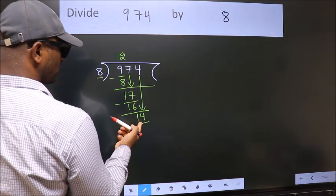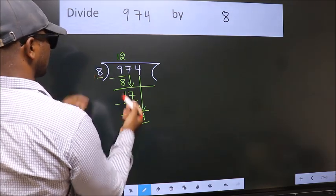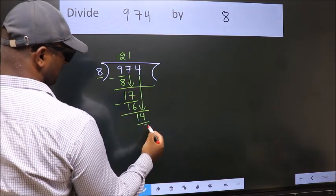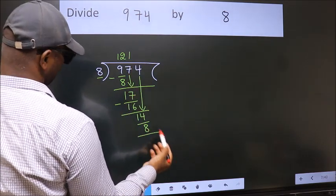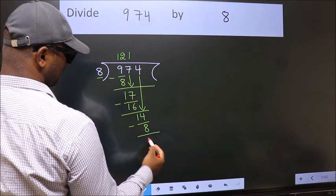A number close to 14 in the 8 table is 8 ones, which is 8. Now we subtract. We get 6.